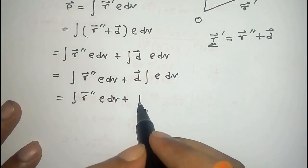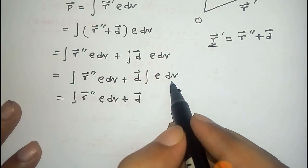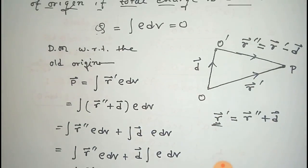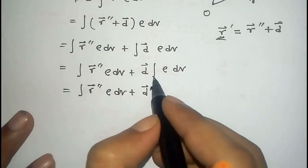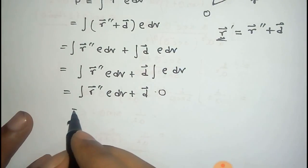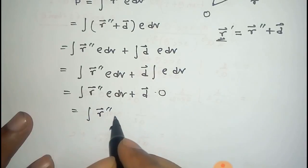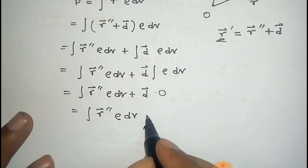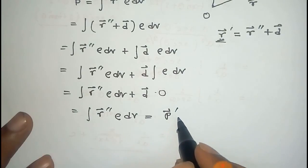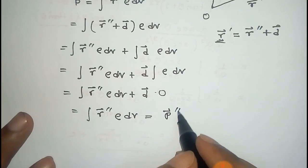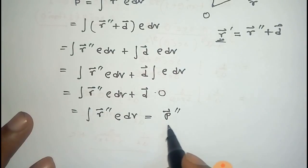Now initially we took that integral ρ dv, that is total charge Q, is zero. This is our initial condition. So we put zero there. Thus the total second term becomes zero.